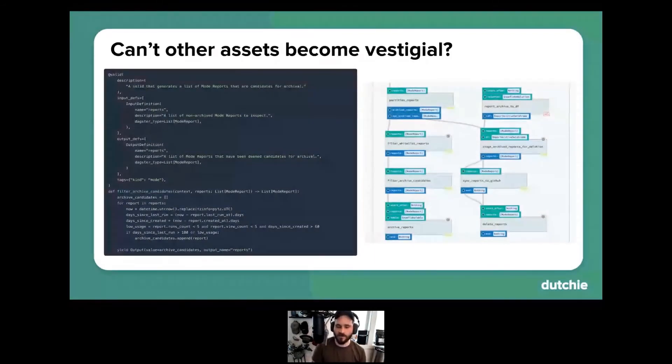So right here is some code from a DAGster pipeline that we use to orchestrate this entire process. For those of you unfamiliar with DAGster, it's a workflow orchestration tool that's very similar to Airflow with a little bit more of a modern feature set. But effectively, what we're doing here is we are routinely archiving and deleting mode reports that have particularly low usage or just haven't been run in a certain number of days.